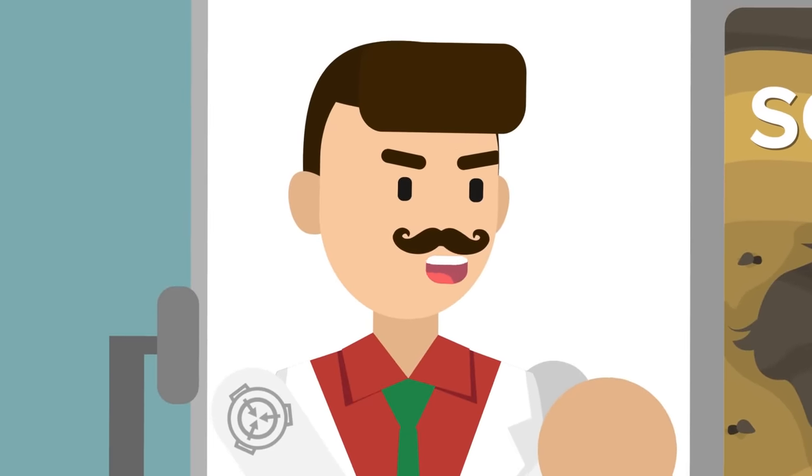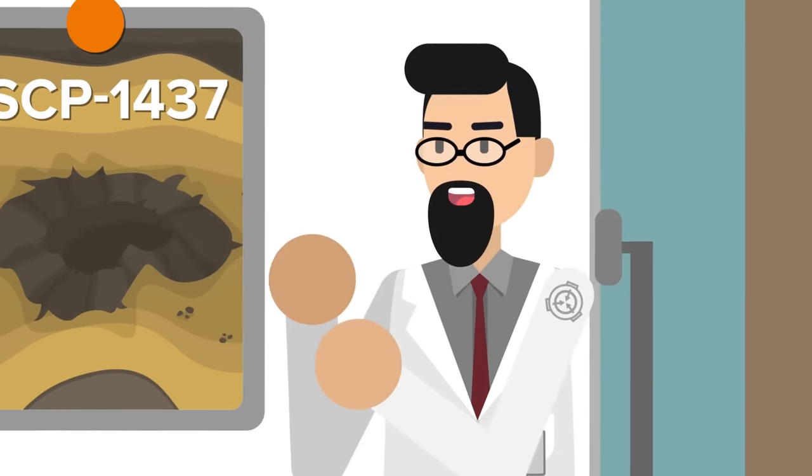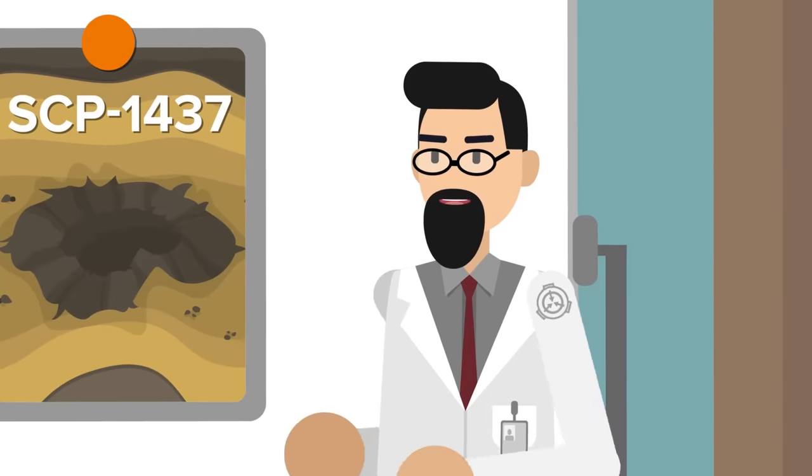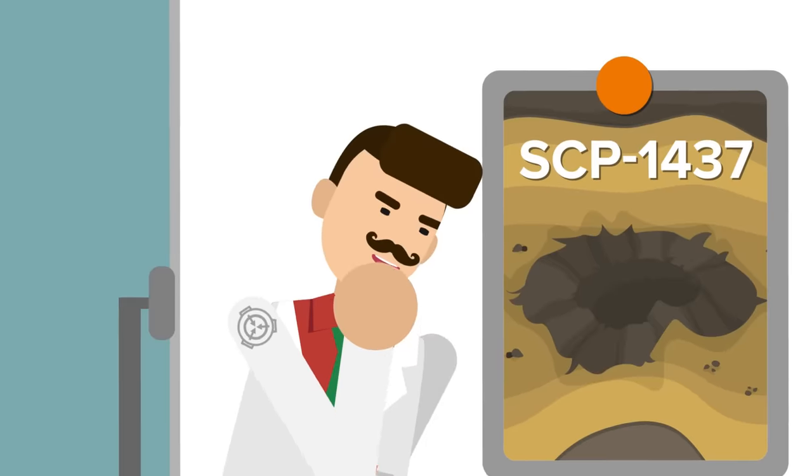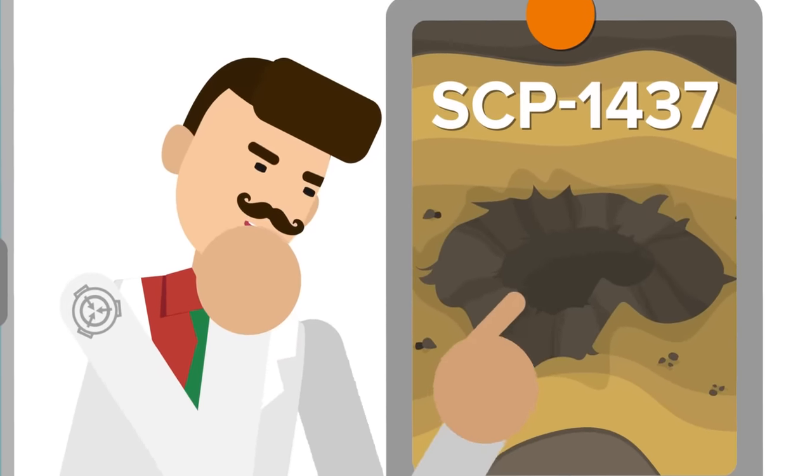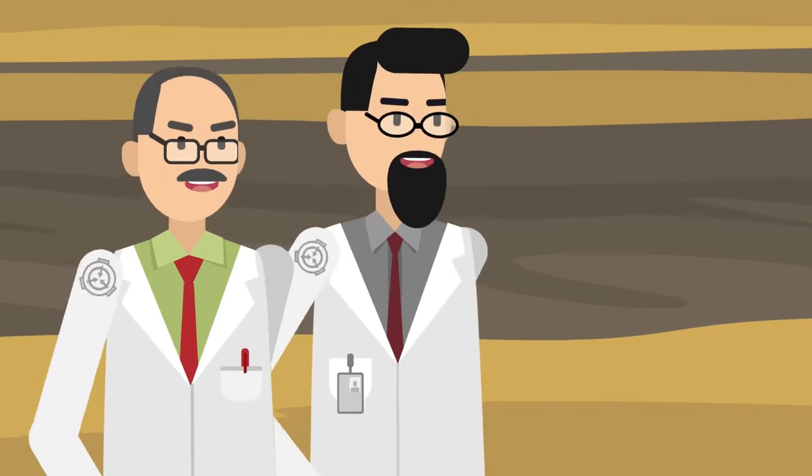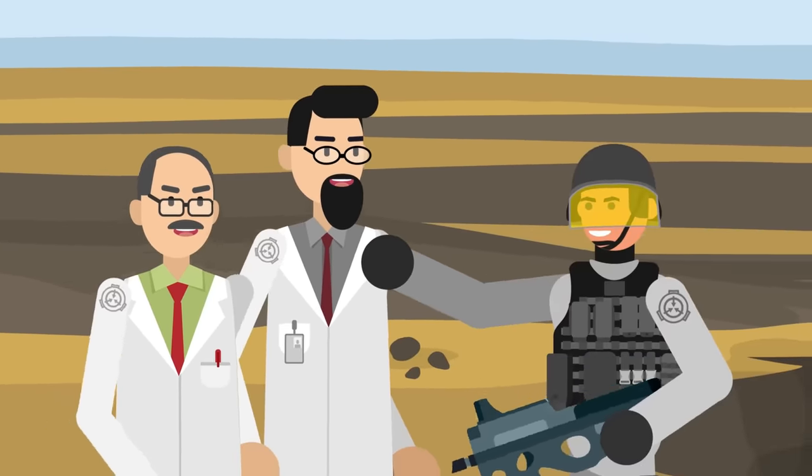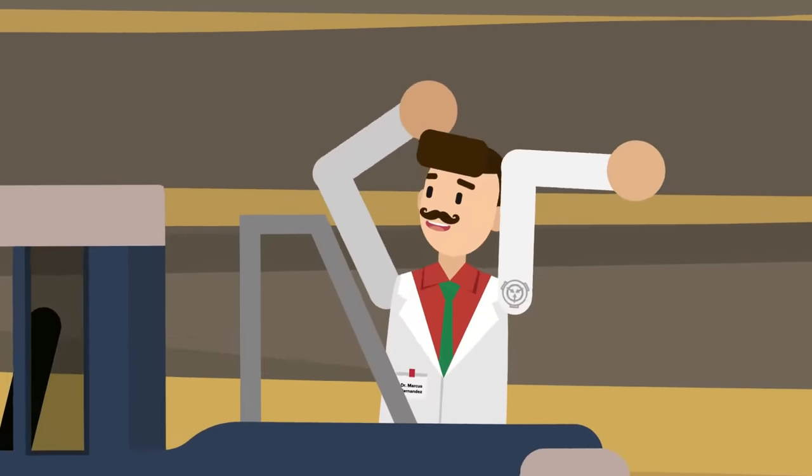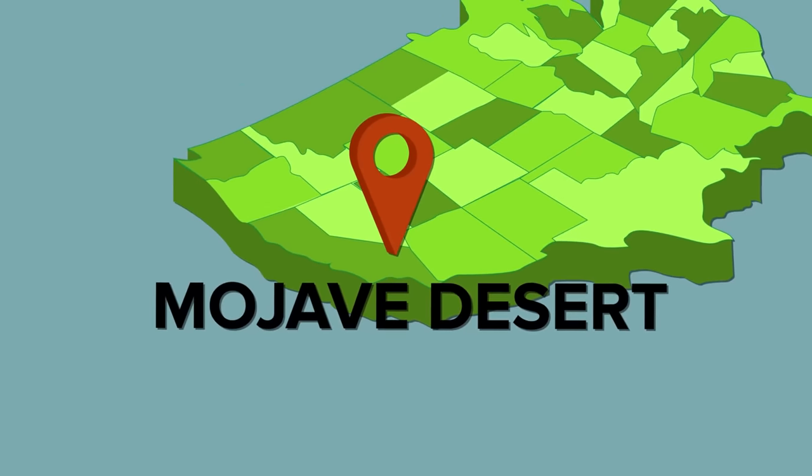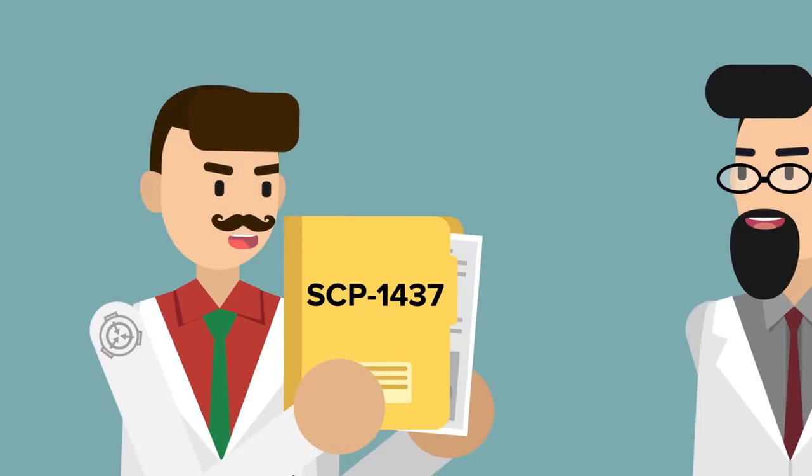That's why he and his team took the assignment of studying SCP-1437 before anyone else in the Foundation was able to. They simply were not sure of what it was capable of, and researcher Hernandez's known attention to detail and cautious nature could best help the Foundation not only establish proper containment procedures, but also ensure that their own personnel were safe while doing so. As researcher Hernandez sat in the back of a jeep that rolled and tumbled over the arid landscape of the Mojave Desert, he reviewed what the Foundation knew about the anomaly. Unfortunately, it wasn't much.